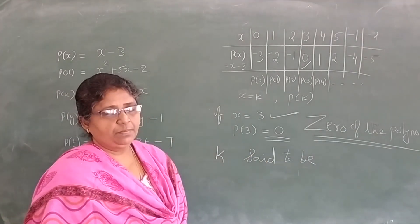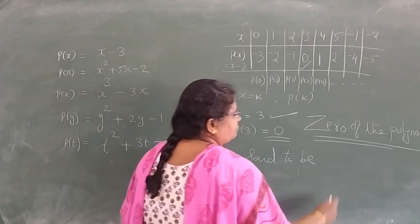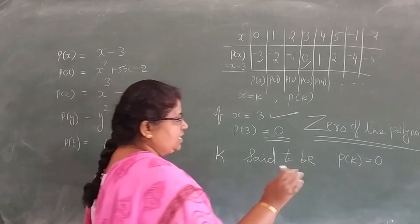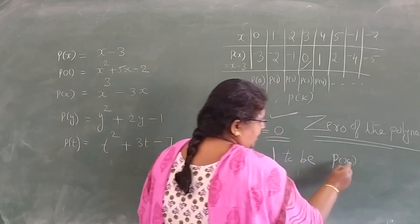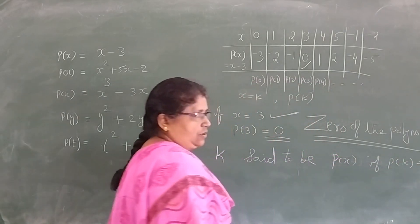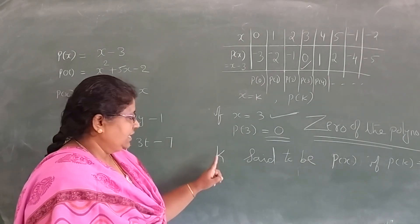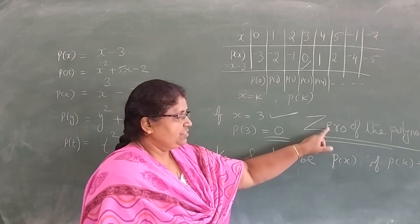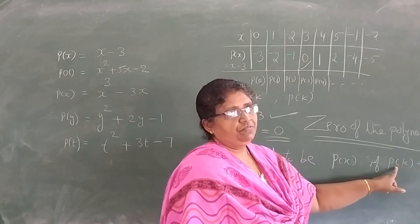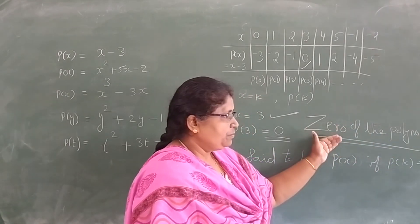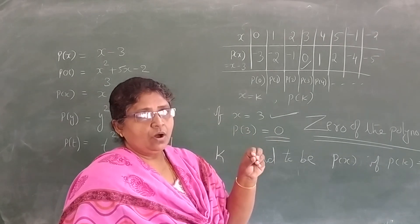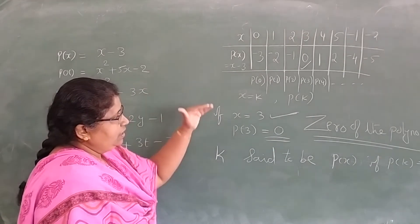Zero of the polynomial p(x): if p(k) is equal to 0. A real number k is said to be a zero of the polynomial p(x) if p(k) is equal to 0. This is important. When a particular real number will be a zero of the polynomial — take down this table and the concept of zero of the polynomial.